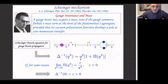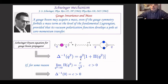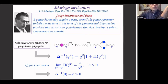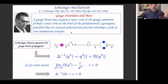The mechanism I am talking about was invented by Julian Schwinger back in 1962. The title of the paper was 'Gauge Invariance and Mass,' which in some sense dispels certain misconceptions. According to this observation, a gauge boson may acquire mass even if the gauge symmetry forbids a mass term at the level of the fundamental Lagrangian, provided that its vacuum polarization function develops a pole at zero momentum transfer.